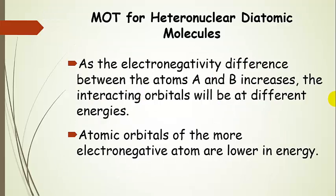Now, as the electronegativity difference between the atoms increases, the interacting orbitals will be at different energies. And so that's one of the big differences here. So atomic orbitals for the more electronegative atom are going to be overall lower in energy than the corresponding orbital for the atom that is less electronegative.